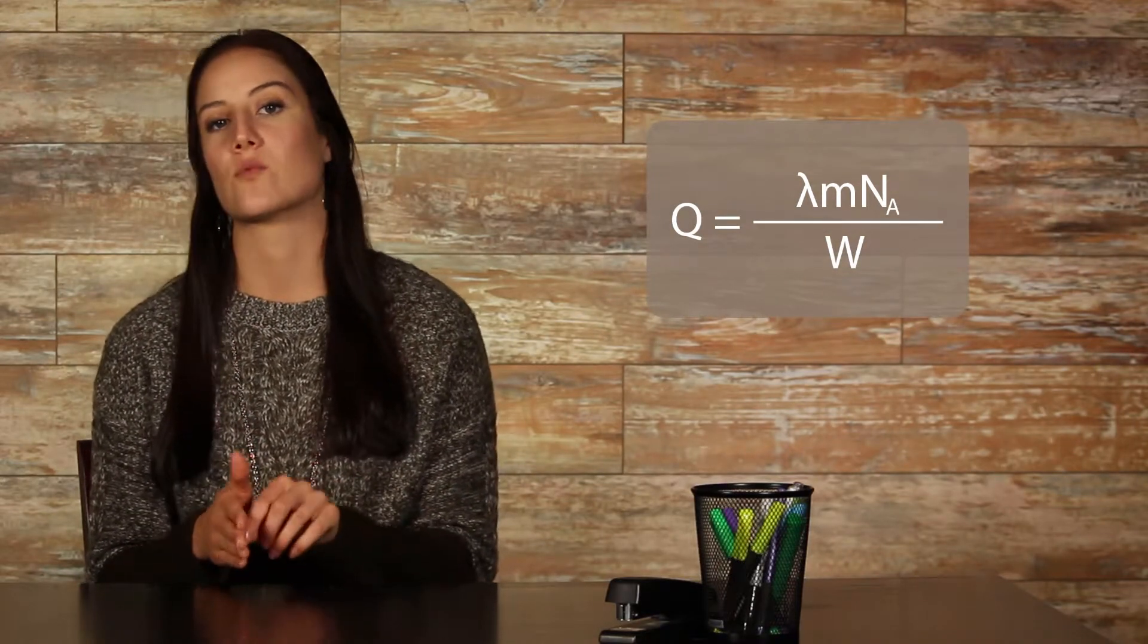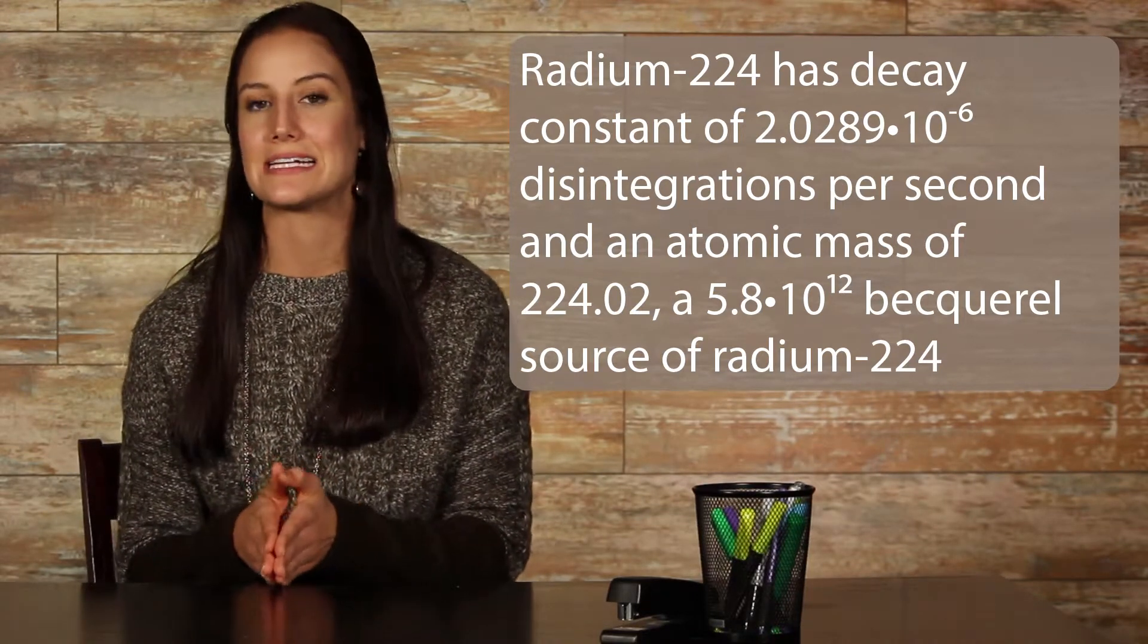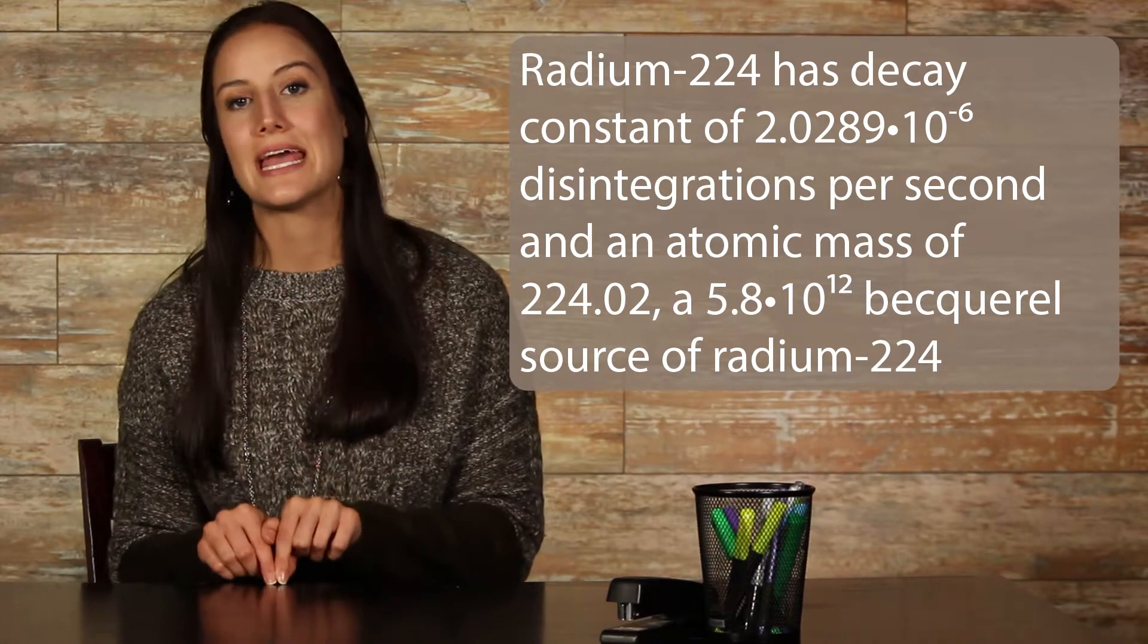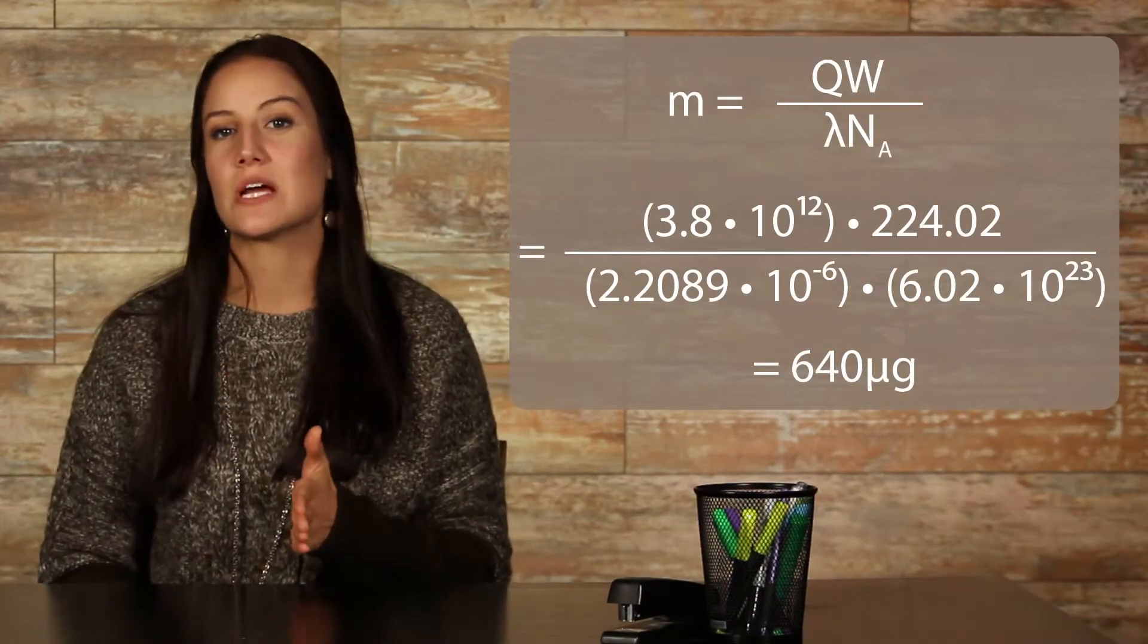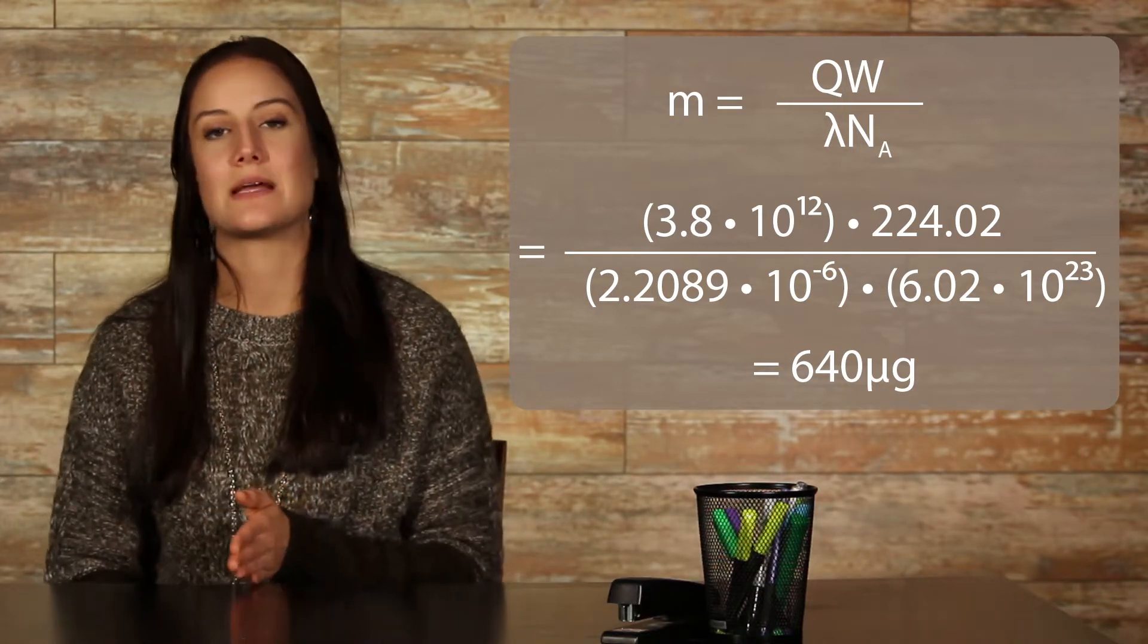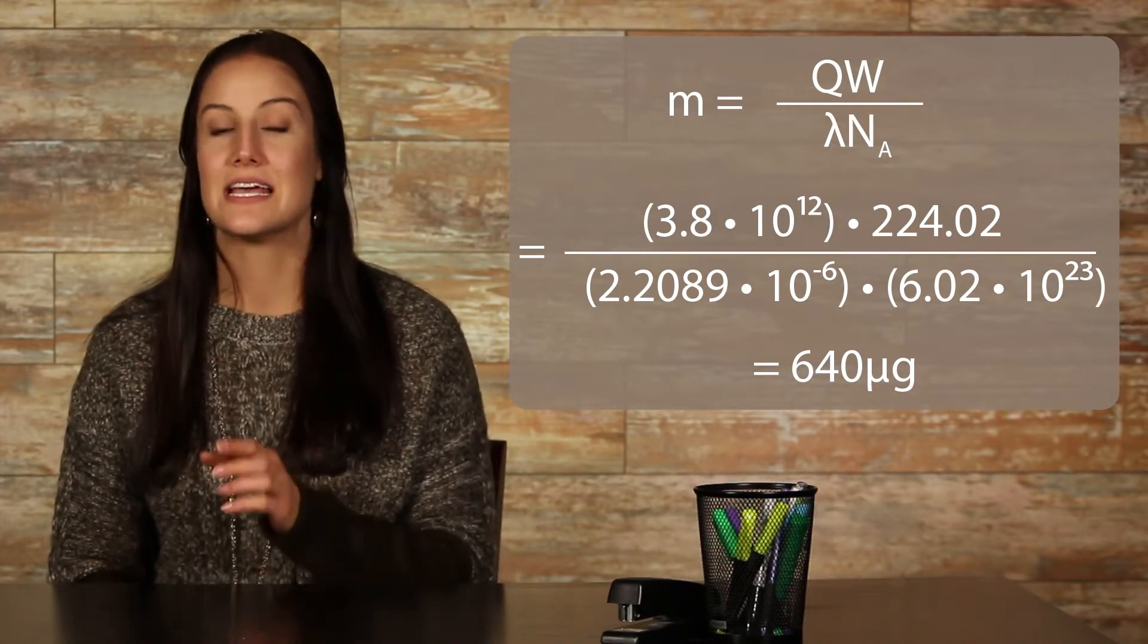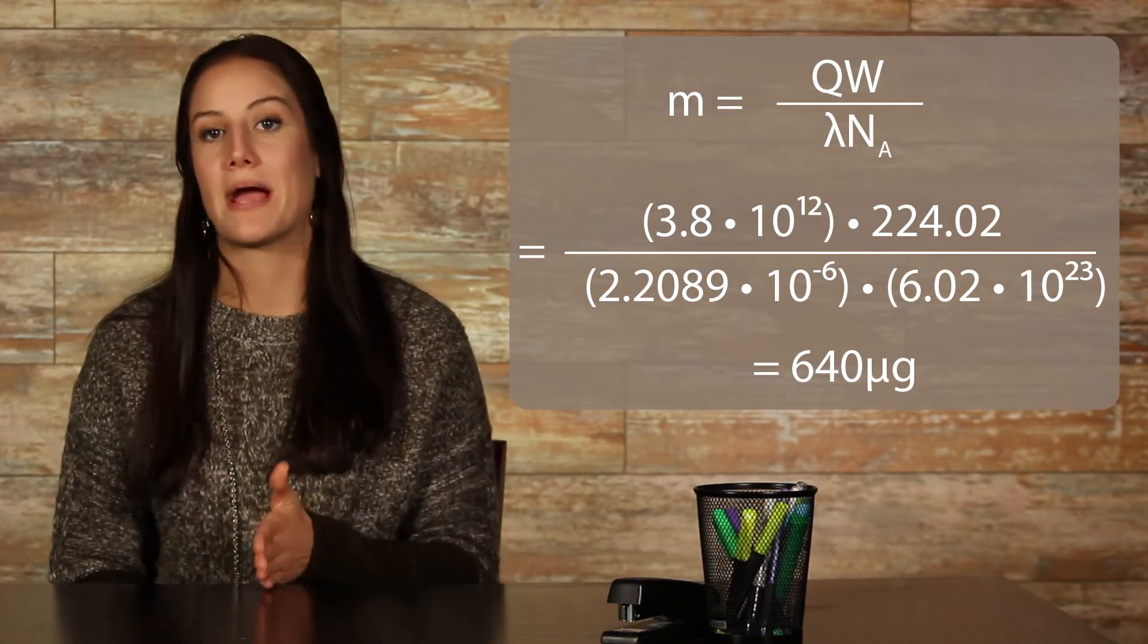For example, if radium-224 has a decay constant of 2.2089 times 10 to the negative 6 disintegrations per second and an atomic mass of 224.02, a 3.8 times 10 to the 12th becquerel source of radium-224 can be calculated to have a mass of m equals Q times W over lambda times N sub a, which equals 3.8 times 10 to the 12th times 224.02 over 2.2089 times 10 to the negative 6 times 6.02 times 10 to the 23rd, which equals 640 micrograms.